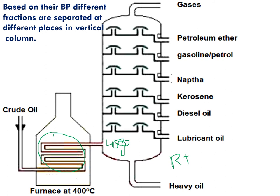For example, when the temperature decreases to 350 degrees, a fraction with a boiling point of 380 degrees becomes liquid, because the temperature is now less than 380. That liquid is separated at that point. Fractions with higher boiling points condense first and are separated lower in the column. Fractions with lower boiling points are separated higher up. Fractions with very low boiling points are separated at the top.